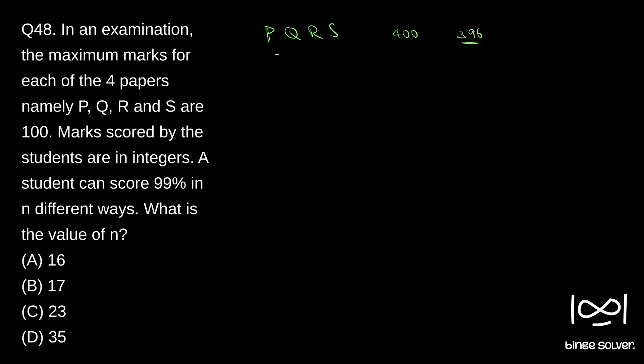He will be losing four marks. He has scored 396 marks and he is losing four marks. It doesn't matter whether he loses the entire four marks in P or he distributes that four marks like one mark from P, one mark from Q, one mark from R, one mark from S. He has lost four marks and in what all ways he can lose four marks in these four papers is the question.